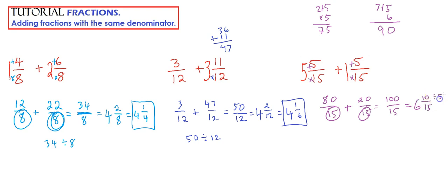That can be simplified. We divide both the numerator and the denominator by 5, and that gives us a simplified answer of, 10 divided by 5 is 2, 15 divided by 5 is 3, so the final answer, 6 two-thirds.